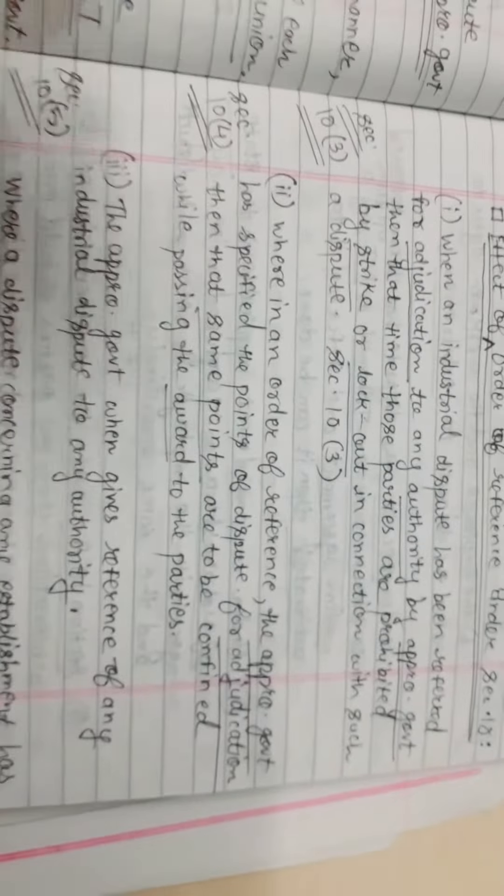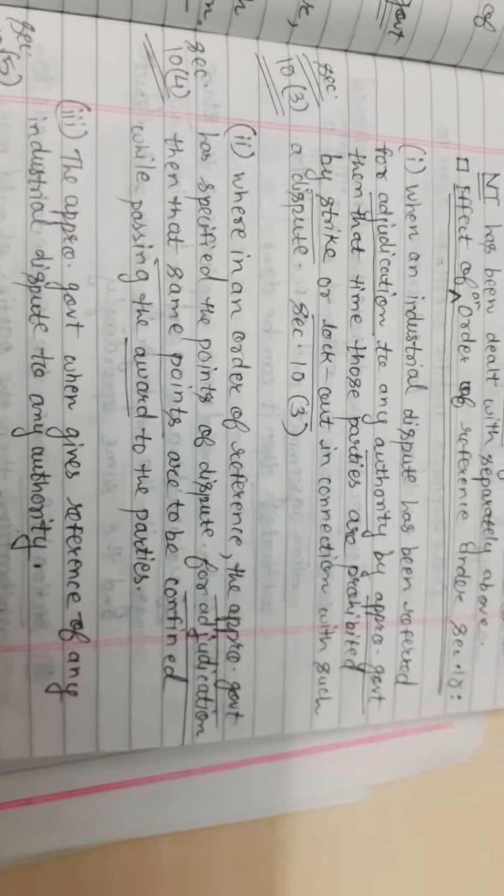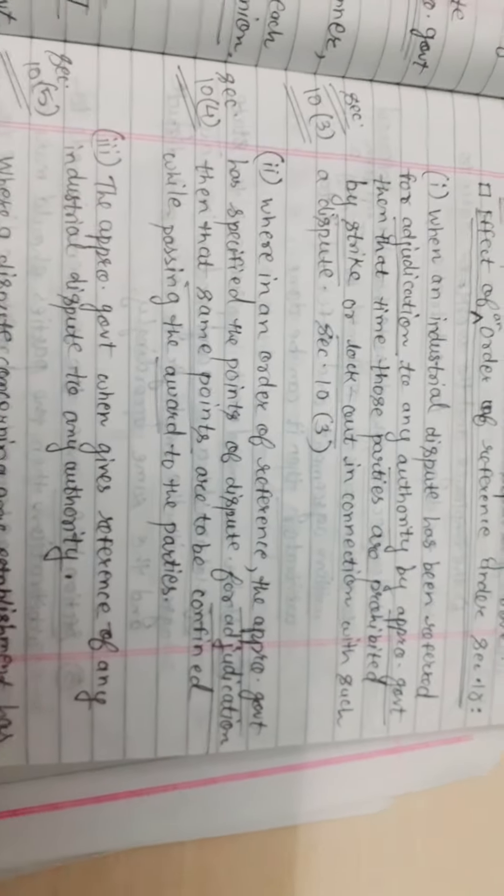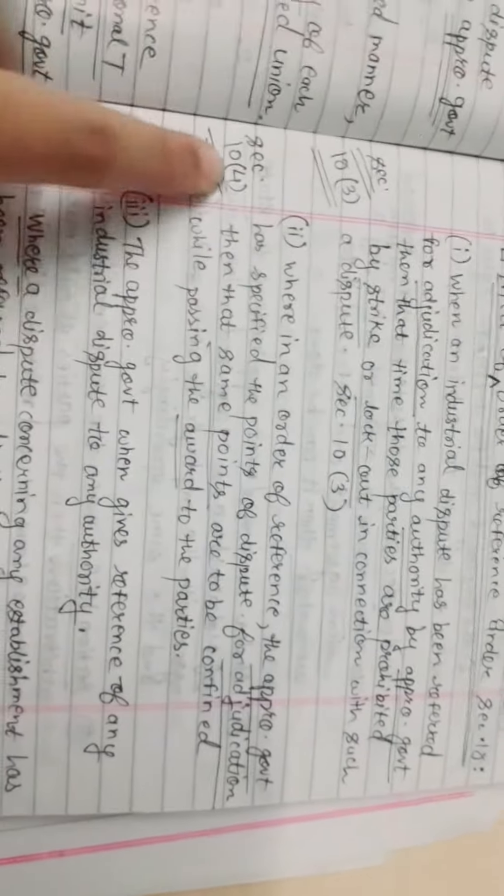When in an order of reference, the appropriate government has specified the points of a dispute for adjudication, then the same points are to be confirmed while passing the award to the parties. It is according to Section 10 Clause 4.